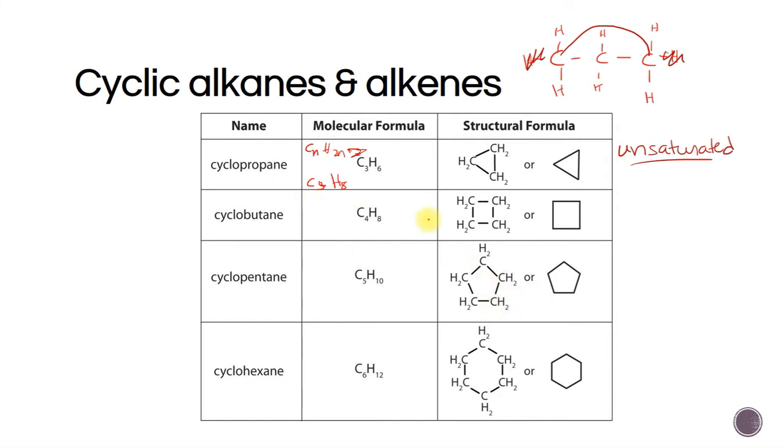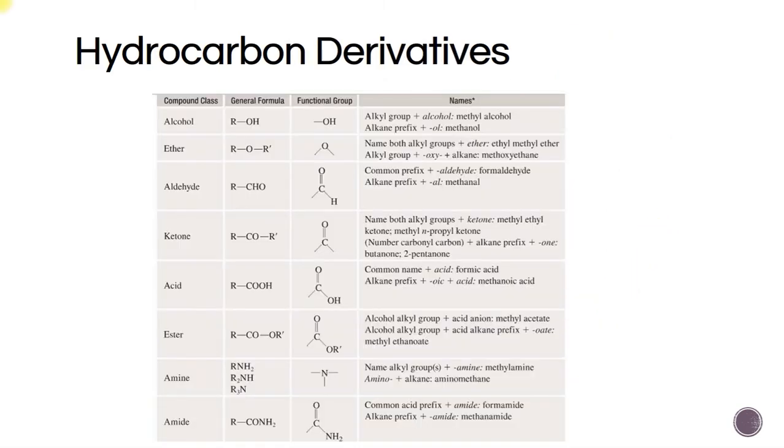But the numbers kind of follow what you'd expect. If there's 4 carbons in the cycloalkane, it's C4H8, and we call it cyclobutane. Cyclopentane would be 5, cyclohexane would be 6, and cycloheptane would be 7. So it goes on like that. They all make little circles, all single bonds here. You could have an alkene though. That's an alkene because we have a double bond.